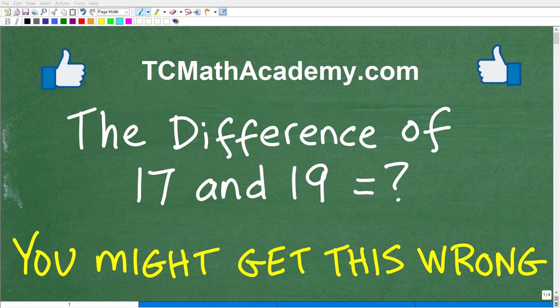Okay, so a lot of people are going to be shocked that they're going to get this basic math problem wrong. And the problem is the following: the difference of 17 and 19 is equal to what number?